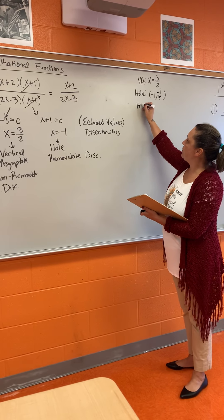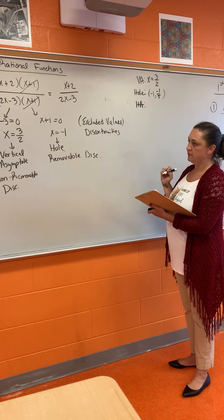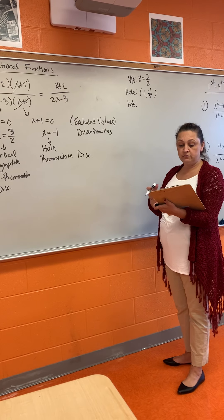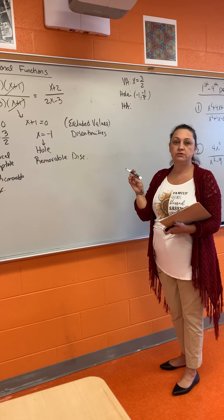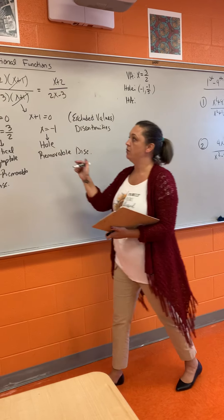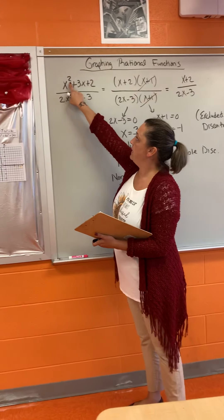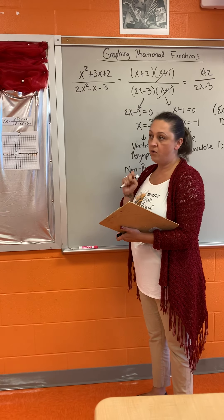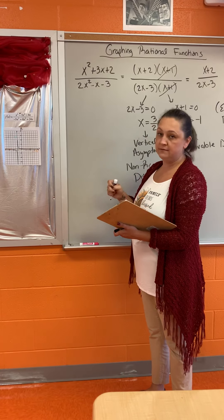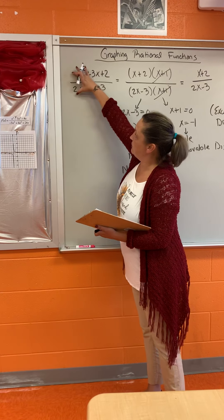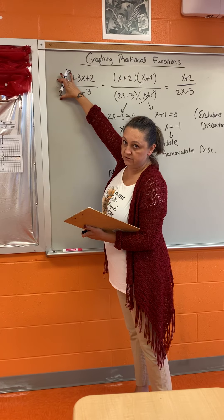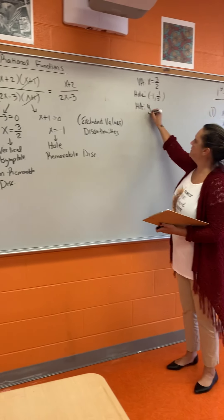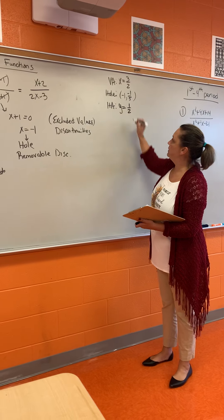The next thing is the horizontal asymptote. To find the horizontal asymptote, you look at the powers from your original function. If the powers are equal, then you use the lead coefficients — the horizontal asymptote is at y = 1/2.